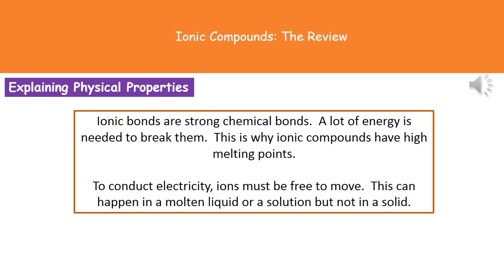We need to be able to explain why ionic compounds have certain properties. Ionic bonds are strong chemical bonds, so in order to break them we need a lot of energy. Because we have to put a lot of energy into the compound to break those bonds, these compounds have high melting points.